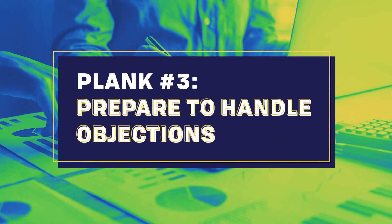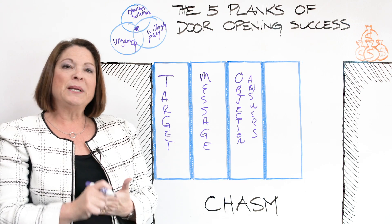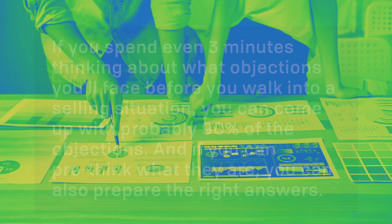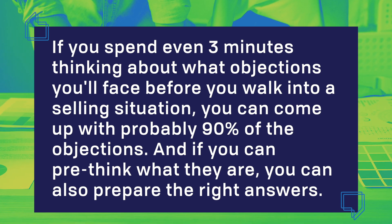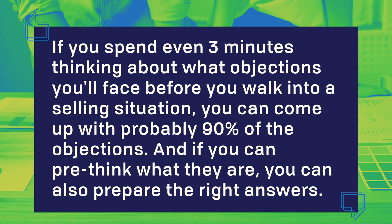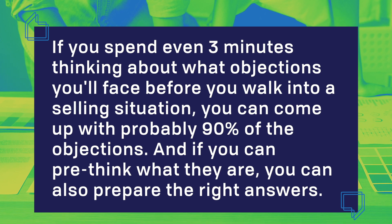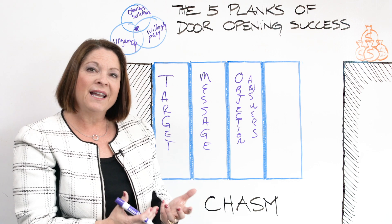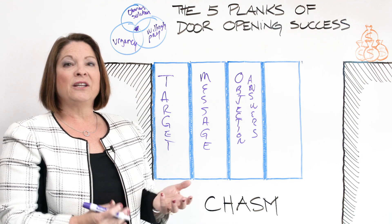The third plank is objection answers — not just any objection answers, but the right ones. There are three P's when it comes to objections: pre-think, prepare, and practice. If you spend even three minutes thinking about what objections you'll face before you walk into a selling situation, you can come up with probably 90% of the objections that will come your way. If you can pre-think what they are, you can also prepare the right answers. But you need to take it one step further — you need to practice them so you can use them conversationally in a performance moment.